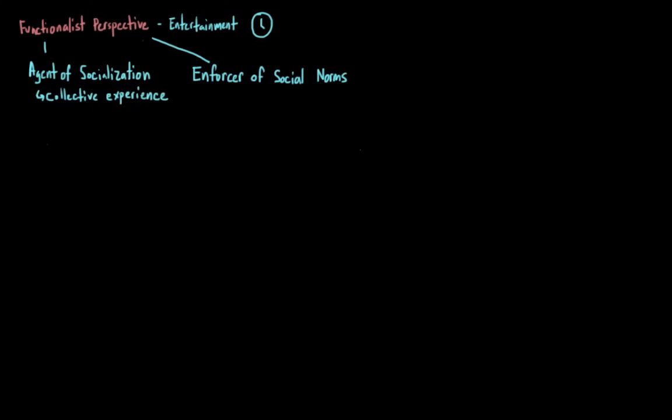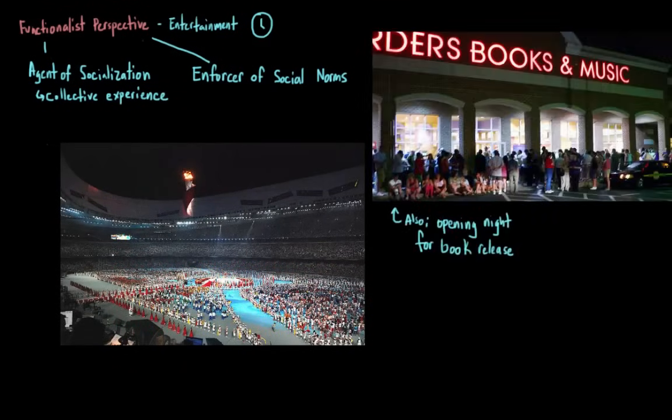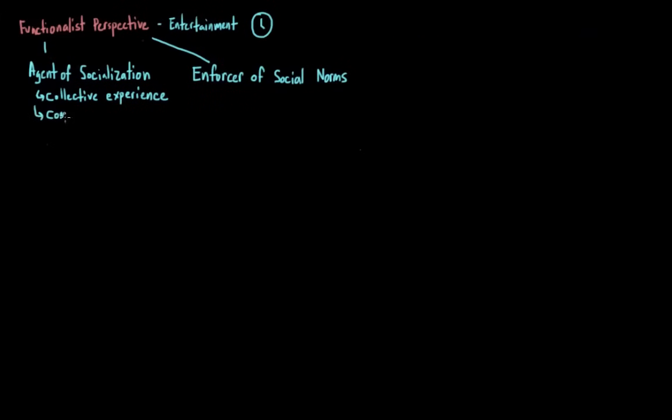So according to the functionalist view, one of the most important functions of mass media is to provide entertainment. So it's meant to occupy our leisure time. But the functionalist view also says that mass media can also act as an agent of socialization and an enforcer of social norms. It presents a standardized view of society and provides a collective experience for members of that society. Think about the shared experience of watching the Olympics on television, or being with a group of people to see a movie on opening night. Mass media also functions to bring people together.